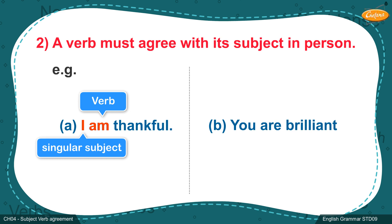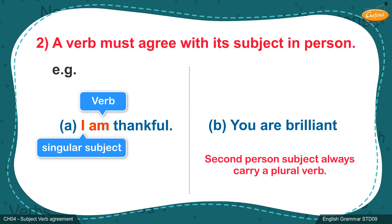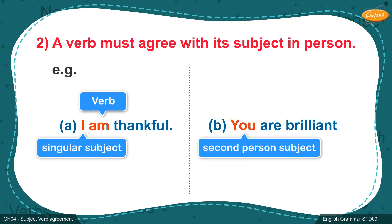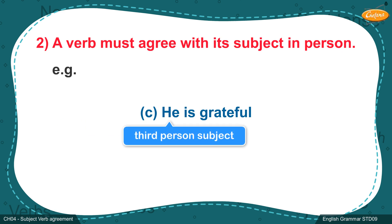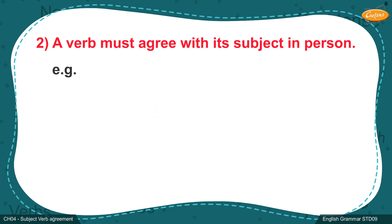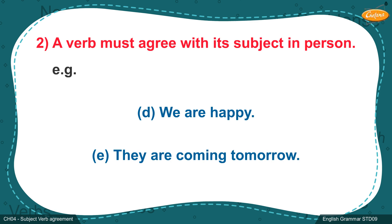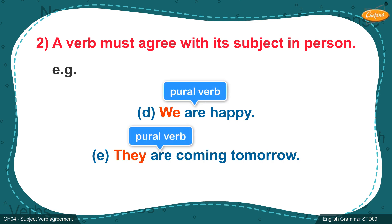Example B: 'You are brilliant.' The second person subject always carries a plural verb. Hence the second person 'you' carries the plural verb 'are'. Example C: 'He is grateful.' The third person subject 'he', being singular, carries a singular verb 'is'. Third person plural subjects always carry a plural verb. Hence in examples D and E, the plurals 'we' and 'they' carry the plural verb 'are'. D: 'We are happy.' E: 'They are coming tomorrow.'